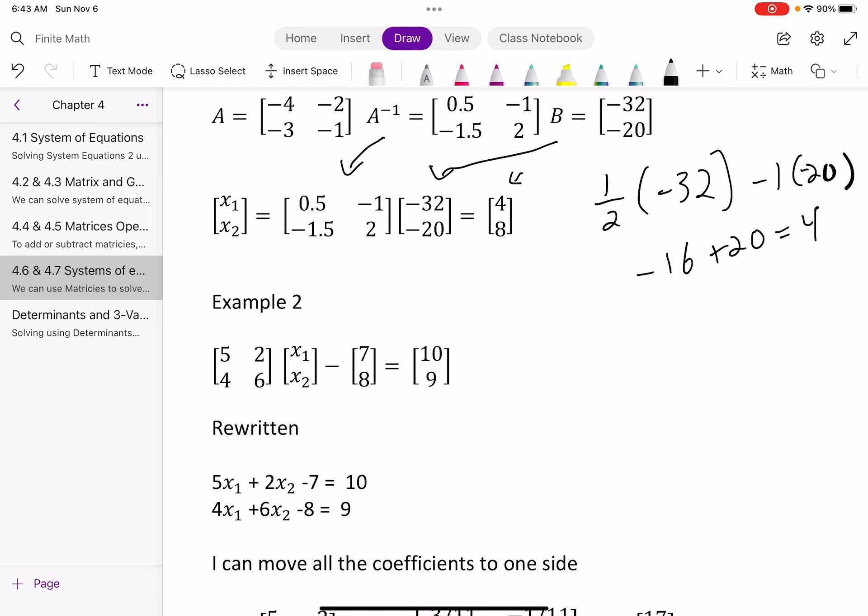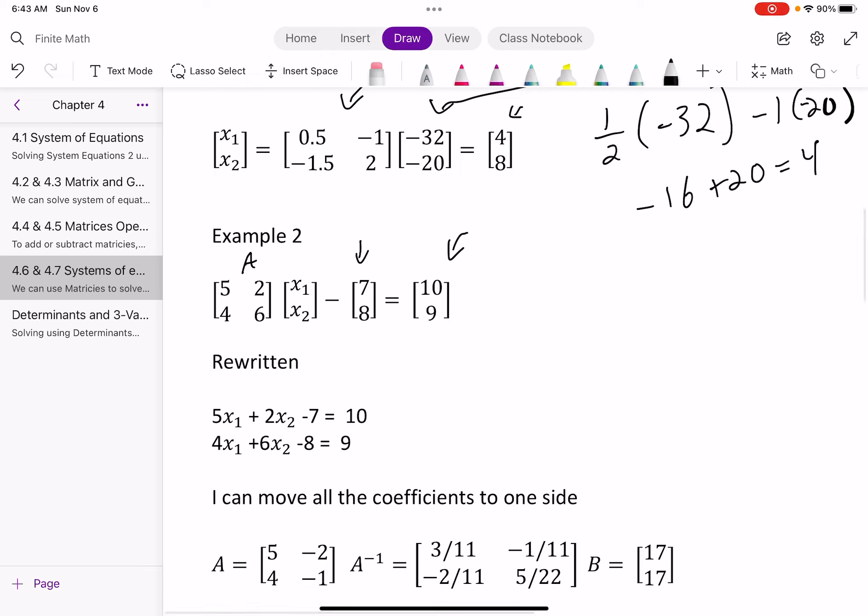Our next example, I could do the same thing where I have my A matrix. I am adding some coefficient matrix or constant matrix, and then I got my B, right? So what I can do is rewrite this out. So 5x1, 2x squared, minus 7, equals 10, and then 4x1, 6x squared, minus 8, equals 9.